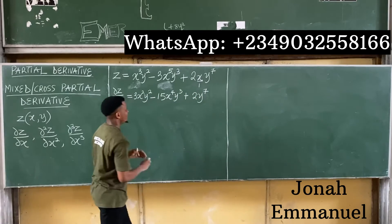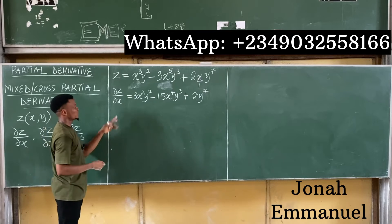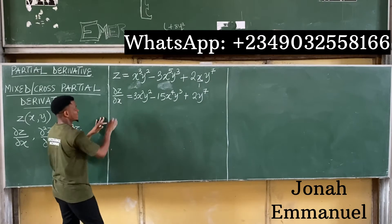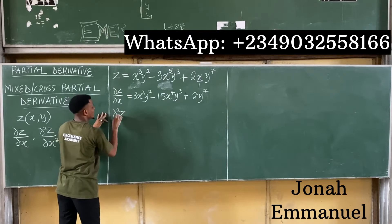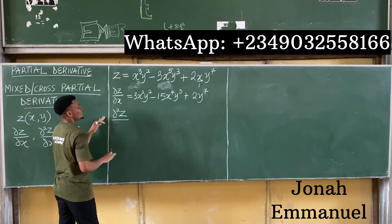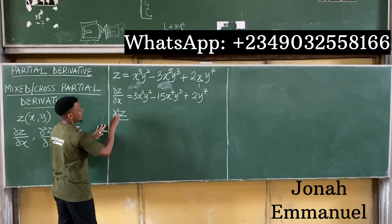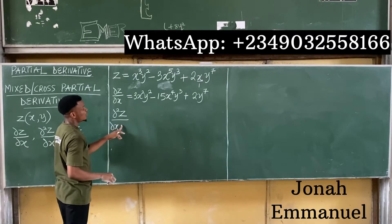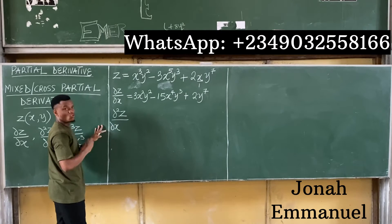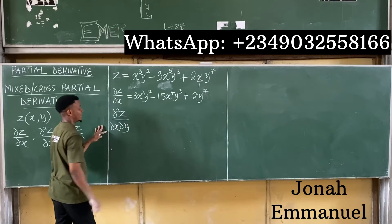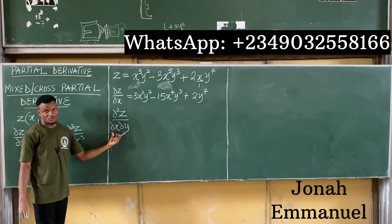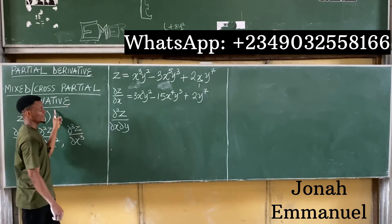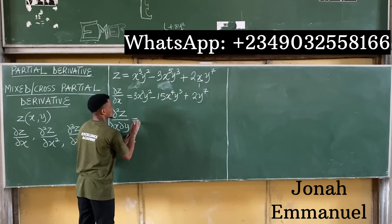In my first partial derivative I differentiated with respect to x. Now I want to differentiate that result with respect to y. This gives us ∂²z/∂x∂y — where the first differentiation was with respect to x and the second is with respect to y. This is called the mixed or cross partial derivative.